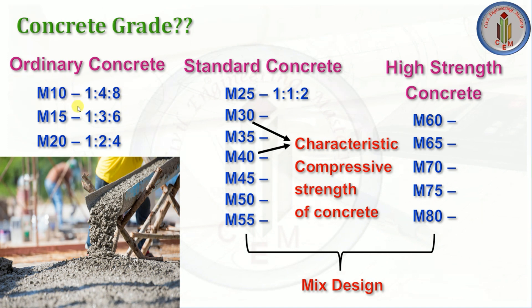The mix ratios for ordinary concrete are: M10 — 1:4:8, M15 — 1:3:6, M20 — 1:2:4, and M25 — 1:1:2. As the grade increases, the mix ratio decreases. Above M25, we have to perform mix design to arrive at the proportions.